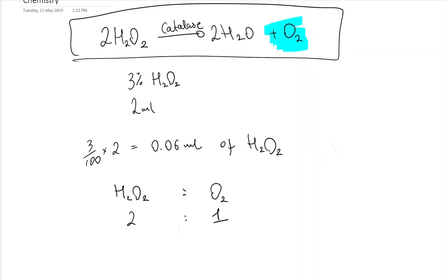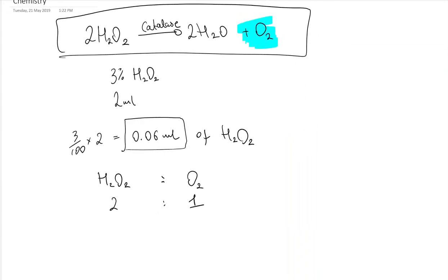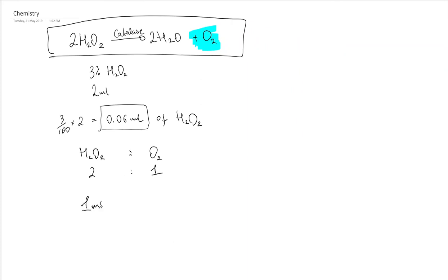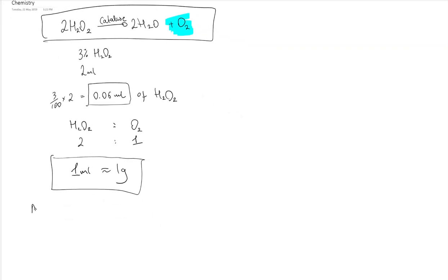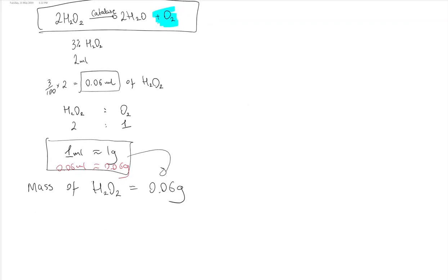Okay, we've got this 0.06 mils, and one thing to know is one mil is approximately the same as one gram. That's an assumption we can make. So the mass of hydrogen peroxide would be 0.06 grams. I'm using that relationship there because if I've got 0.06 mils here, it would be 0.06 grams.